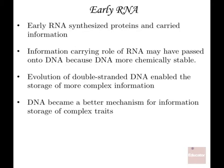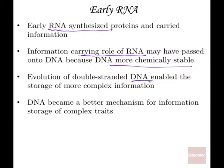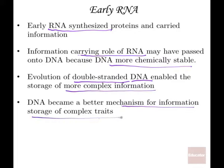In the early days of RNA, we had early RNA synthesizing protein and carrying information about how to synthesize that protein. The information-carrying role of RNA passed into DNA because DNA was more chemically stable. The driving force to all of this was natural selection — the RNA molecules that were most efficient in carrying and storing information ultimately turned into DNA. DNA is double-stranded, so we can store more complex information, making it a better mechanism for information storage of complex traits.